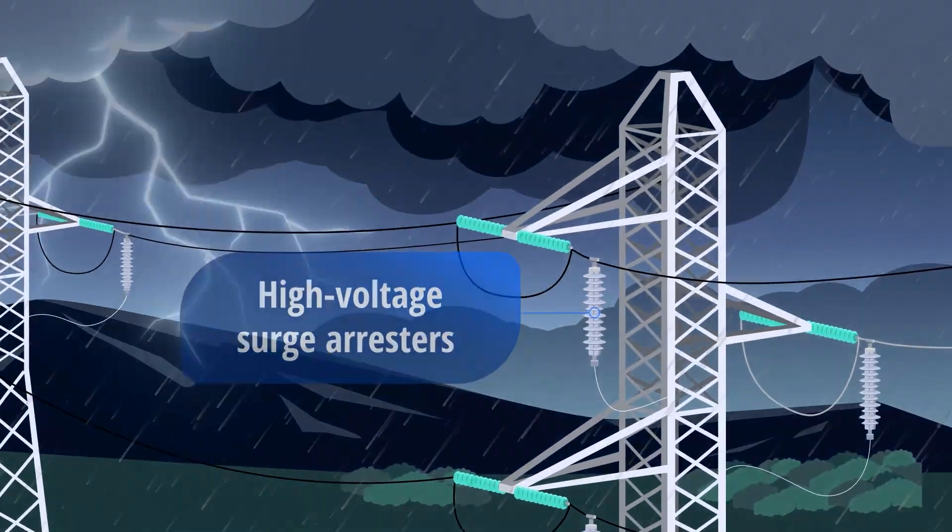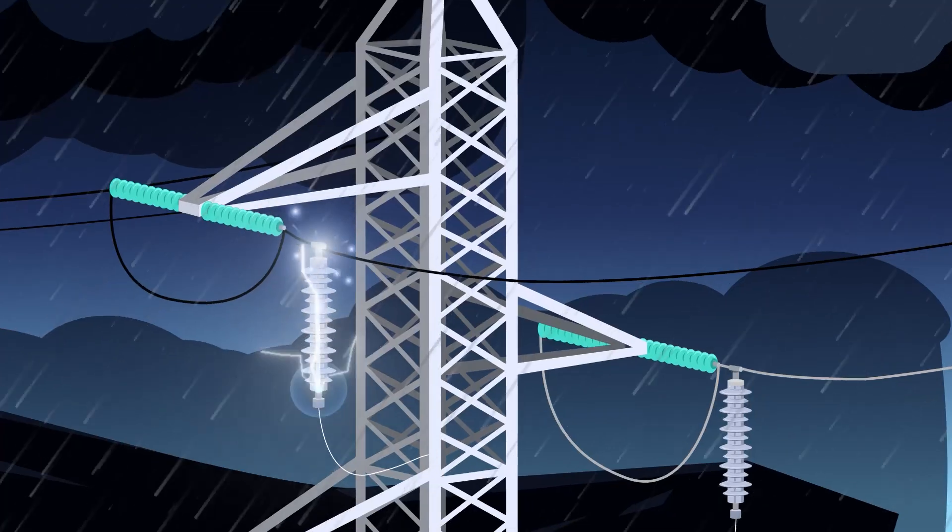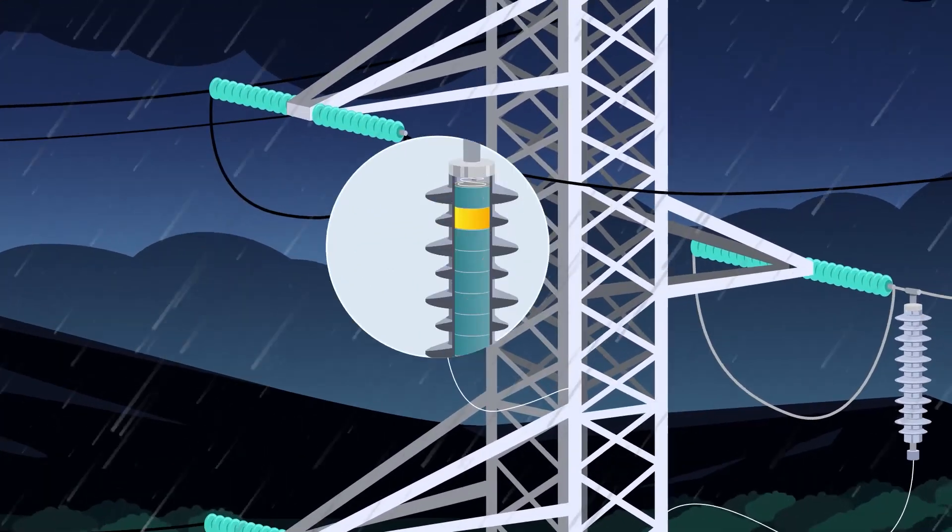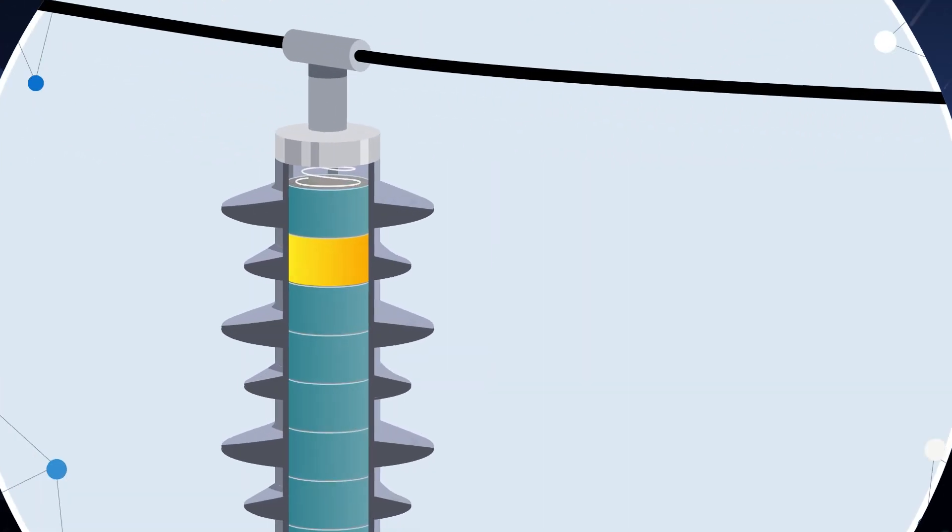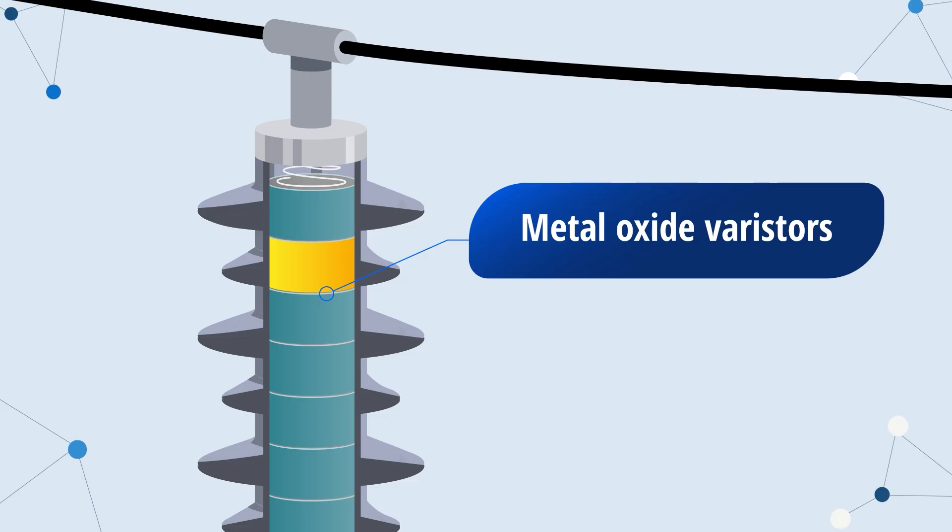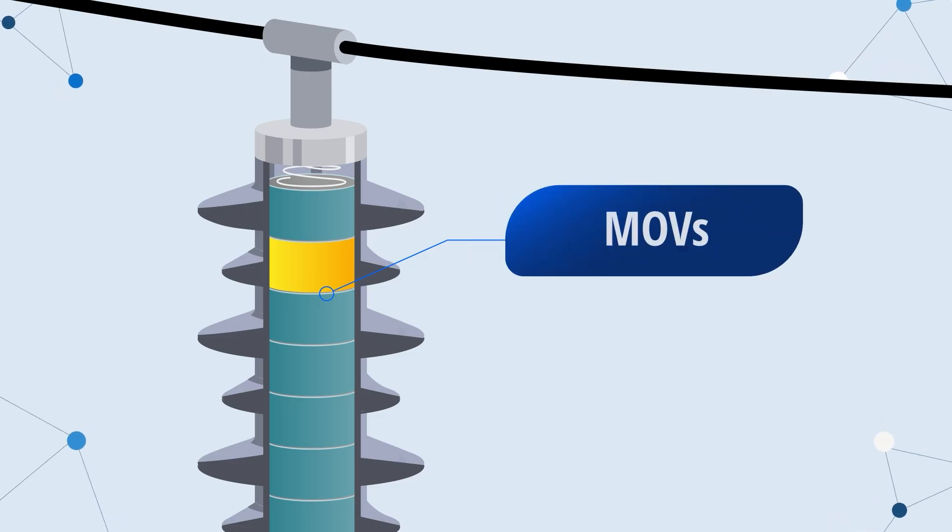High-voltage surge arrestors are the primary defense for electrical equipment against lightning strikes. The core of every surge arrester contains a series of disks called metal oxide varistors, or MOVs.